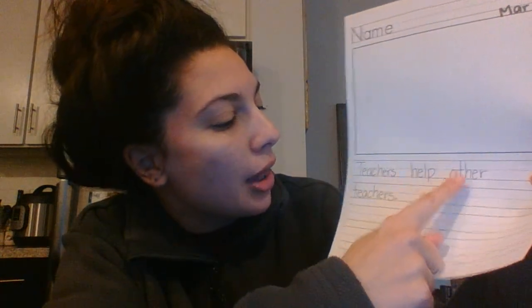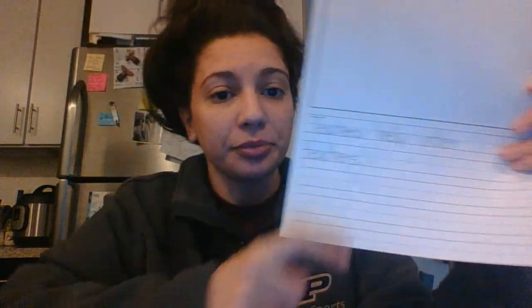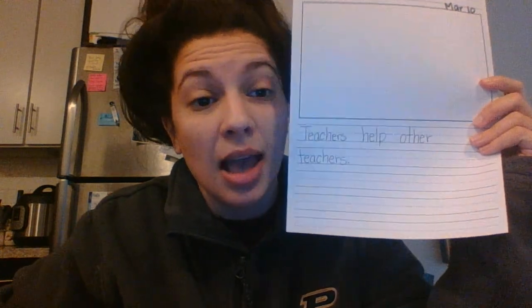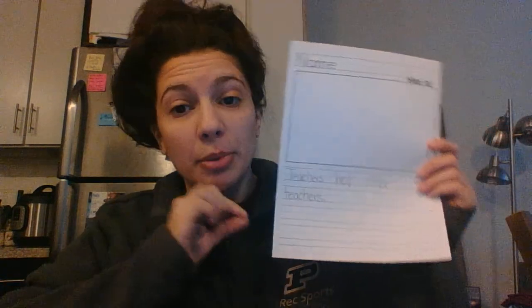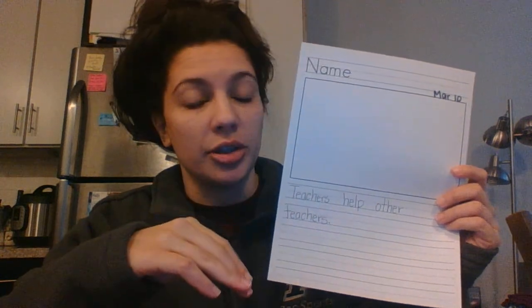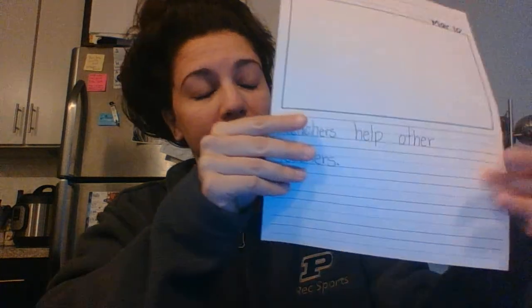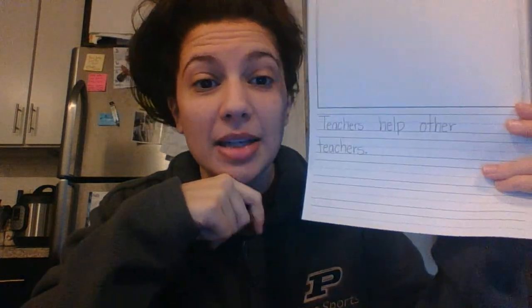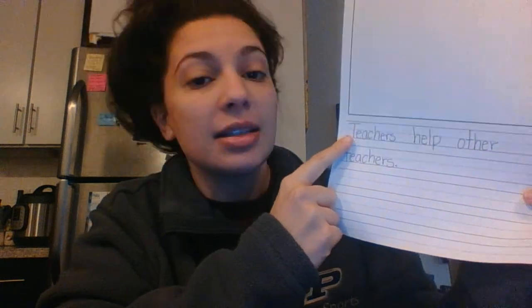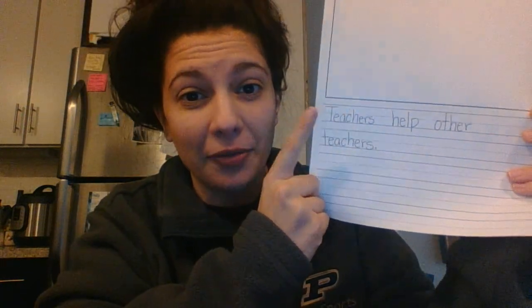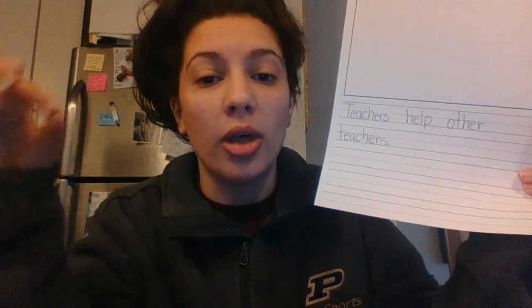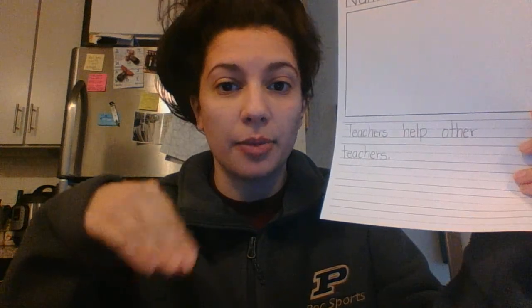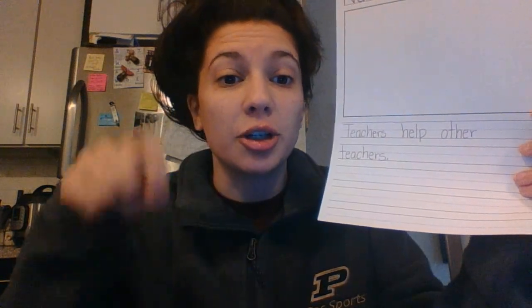Now that I have my sentence written, I wrote: teachers help other teachers. That was my sentence. Remember, you guys are writing about doctors, not teachers. I'm just showing you examples because I don't want to steal your ideas while I'm writing them down. What I want you to pay attention to is the first letter of my sentence is a capital letter — the first letter of my sentence is a capital letter all the time. All of my other letters are lowercase, so make sure you are doing that.